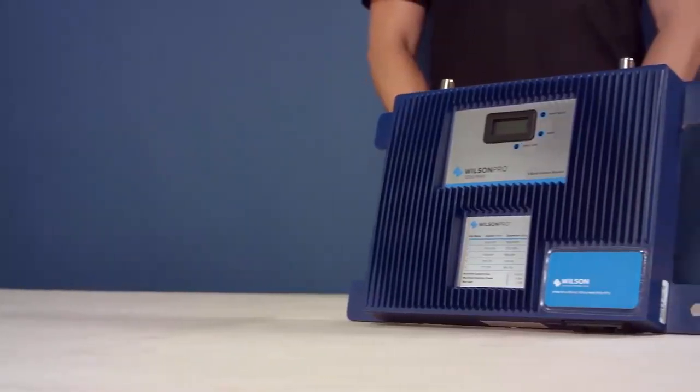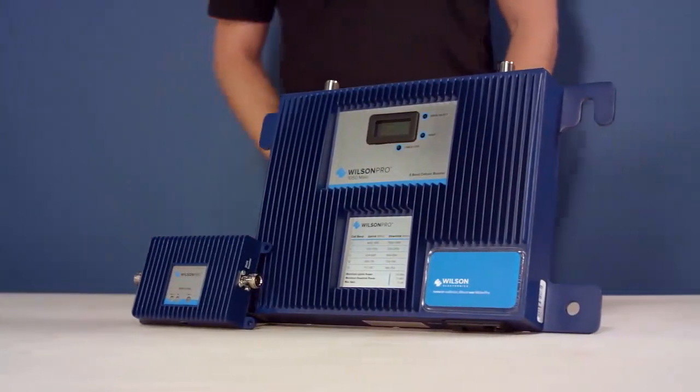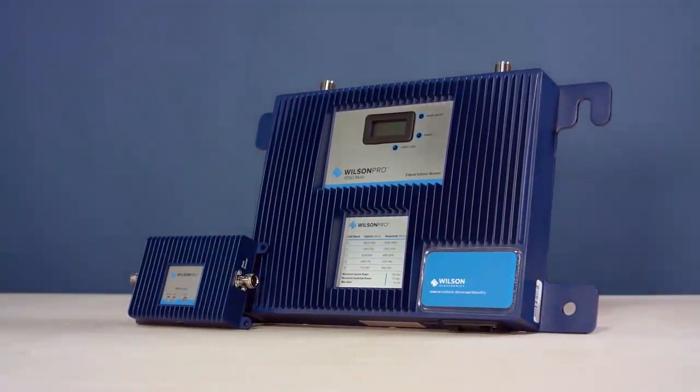The Pro 1050 contains two booster units but is designed as a system. Both 1050 amplifiers must be installed for the 1050 system to function.